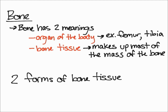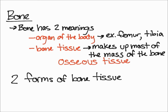There are two forms of bone tissue: spongy bone and compact bone. One thing to mention — bone tissue is also called osseous tissue. Osseous tissue is what we call bone tissue, so they are the same thing. You'll probably hear it referred to as osseous tissue more often because it sounds more scientific. So the two forms of osseous tissue are spongy bone and compact bone.